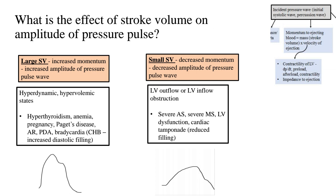Let's look at the components of momentum, starting with stroke volume. What is the effect of stroke volume on the amplitude of the pressure pulse? A large stroke volume leads to increased momentum and therefore an increased amplitude of the pressure pulse wave. This is seen in hyperdynamic and hypervolemic states like hyperthyroidism, anemia, pregnancy, Paget's disease, aortic regurgitation, PDA, and in severe bradycardia such as complete heart block, where increased diastolic filling results in a greater stroke volume available for ejection in the subsequent systole.